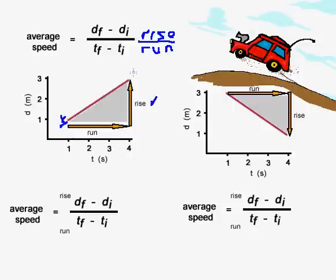So distance for rise. The final distance, we look at this value and we will write down three. The initial distance, I started out at one, so I'm going to put down one.